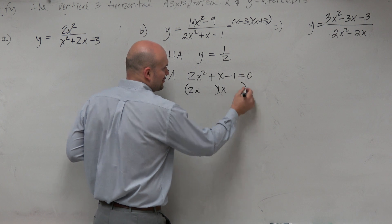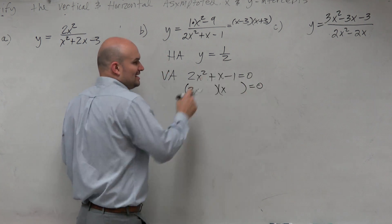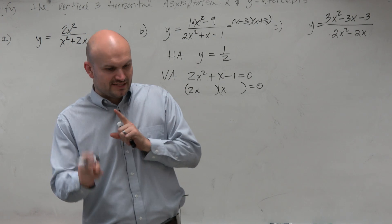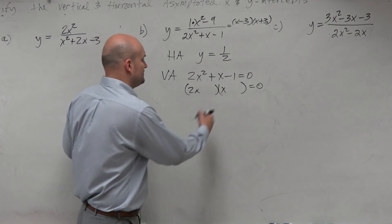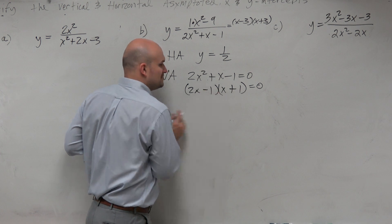So I know it's going to be a product of two binomials. I know it has to multiply to give me negative 1. So therefore, it's going to be a difference. And since it's a difference, the larger of the two products has to be positive. So that means that should be a positive 1. That should be a negative 1.